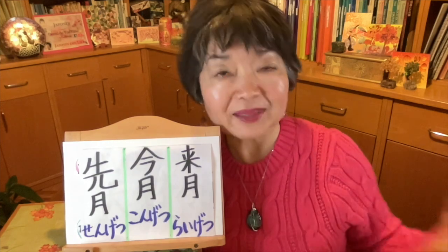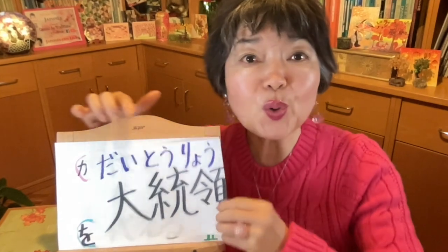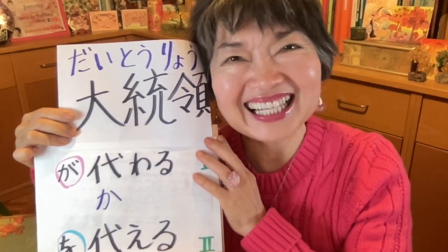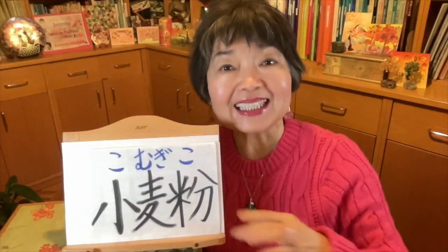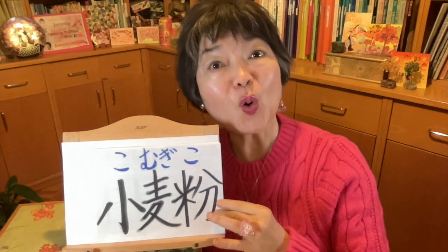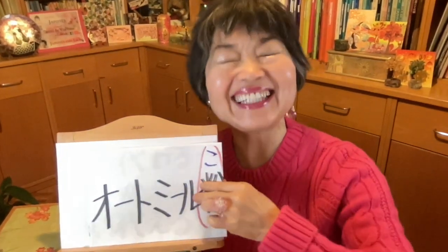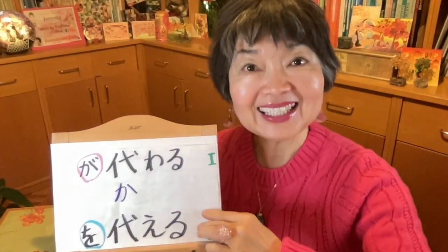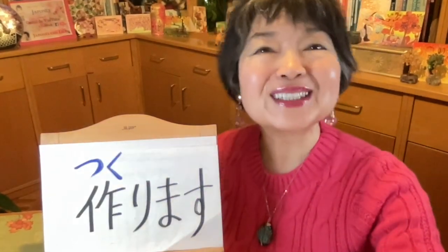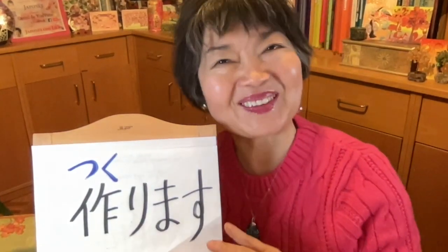The president changed last month: 先月、大統領が変わりました. I made a cake replacing wheat flour with oatmeal flour: 小麦粉をオートミルコに変えて、ケーキを作りました.